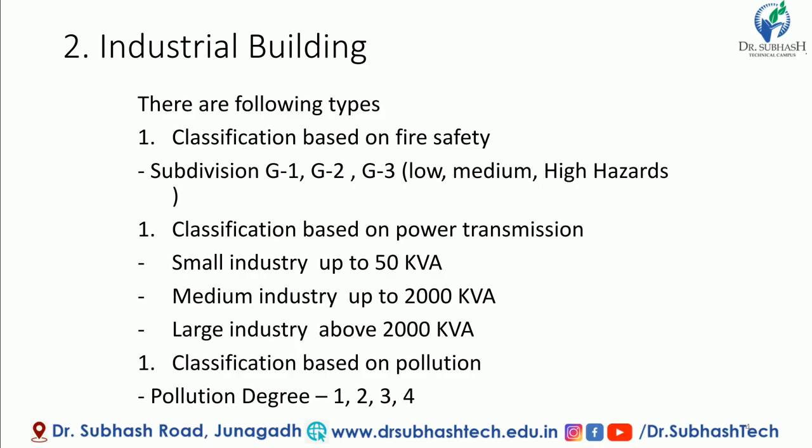Next is classification based on power transmission — depending on the power transmitted to the industry. There are three types: Small industry, where power transmitted is up to 50 kVA. Medium industry, which ranges from 50 kVA to 2000 kVA. And large industry, where the range is above 2000 kVA.